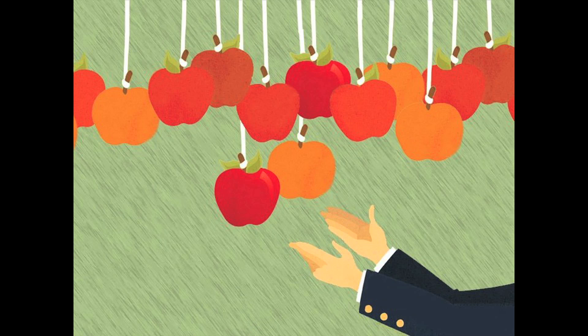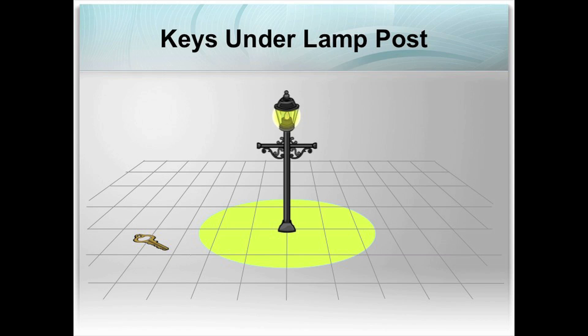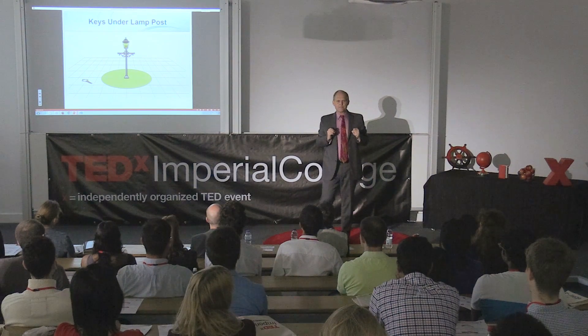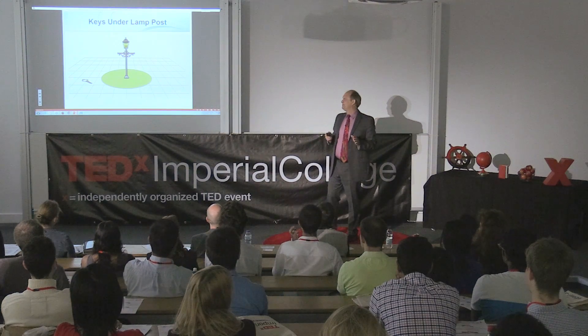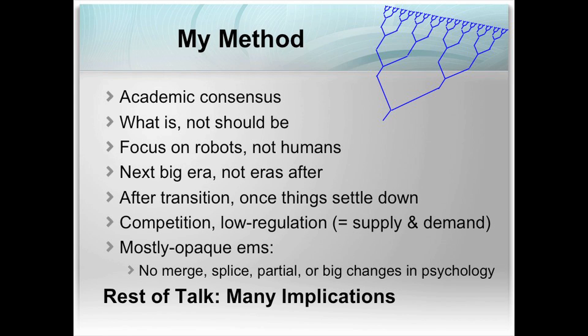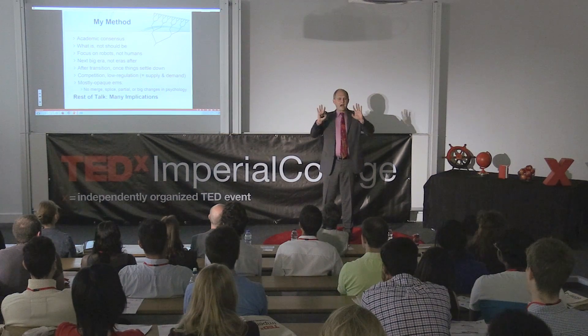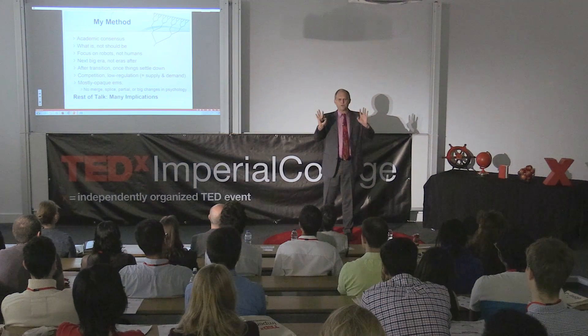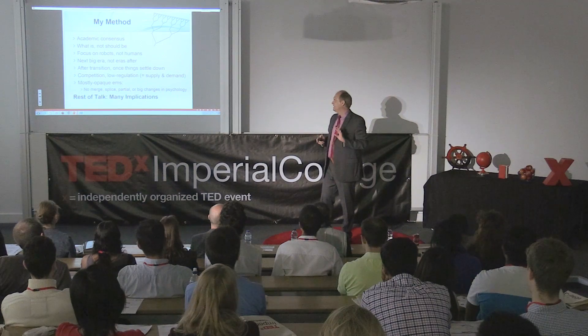I'm also going to do what theorists do everywhere — look for our keys under the lamppost — making simplifying assumptions so we can figure things out. This means we don't find the keys under the lamppost, but we have a good map of the dark so we can go exploring. I'm applying academic consensus, not trying to be original except in asking: what would happen if we actually had brain emulations? I'm not trying to make an ideal world — just telling you what seems most likely if we do the least to avoid it.